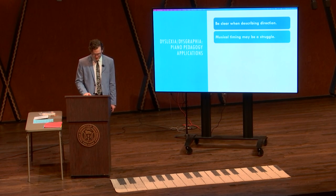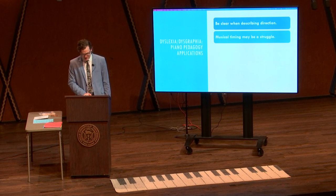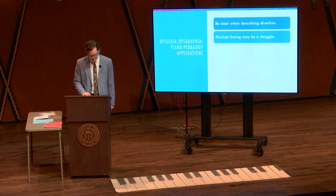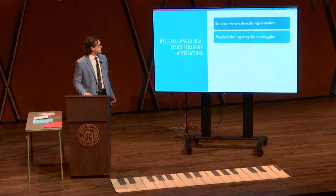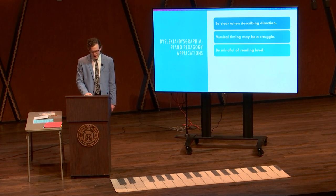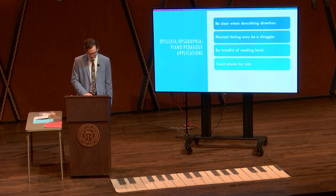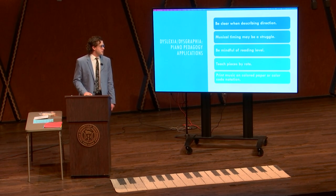Know that musical timing may be a struggle. In an article by Katie Overy, results support suggestions that timing is a difficult area for dyslexic children, and suggest that rhythm skills and rapid skills may need particular attention in any form of musical training with a dyslexic student. As a teacher, have multiple ways of teaching rhythm, such as large movements, clapping, tapping, stomping, etc. Be mindful of their reading level — pick music that will help them retain what they already know as well as move forward, but not too quickly. Teach pieces by rote, as they will learn music faster by rote than sometimes looking at music. And print music on colored paper or color-code notation.